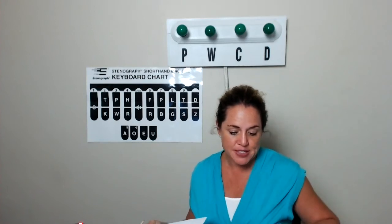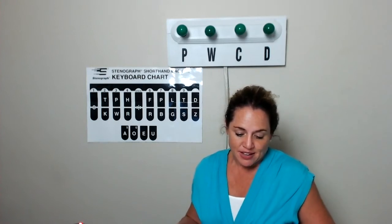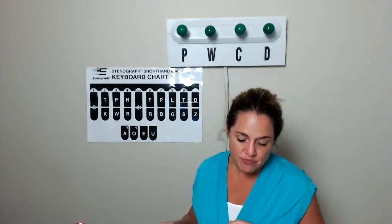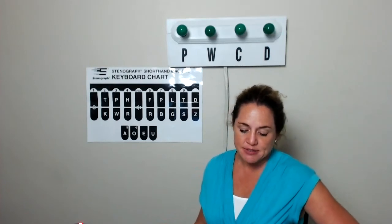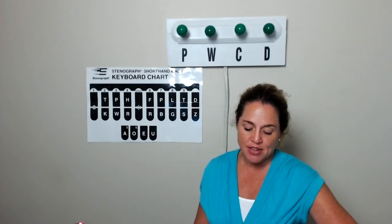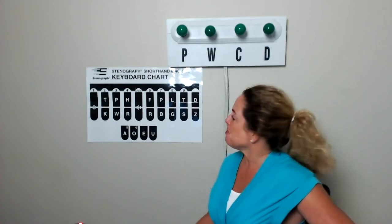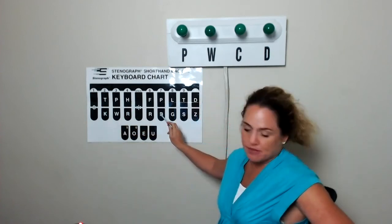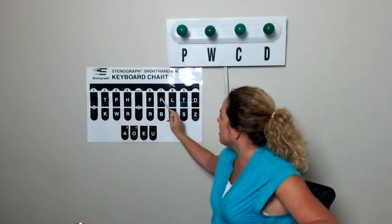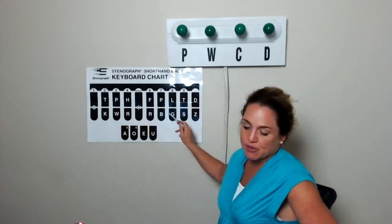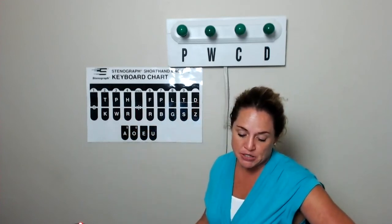We have some new briefs. So today, we're going to cover somebody, someone, something, everybody, everyone, everything, anybody, anyone, anything, nothing, and nobody. So let's look at somebody. Somebody is going to be initial S-M, final B. Someone, initial S-M, final N. Something, initial S-M, final G. Pretty self-explanatory there.